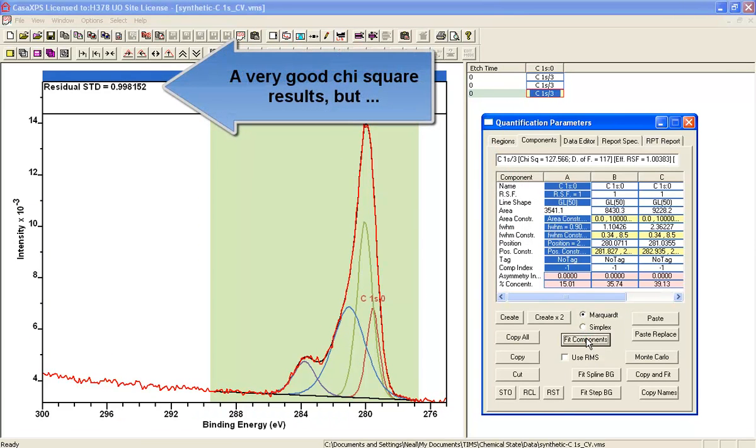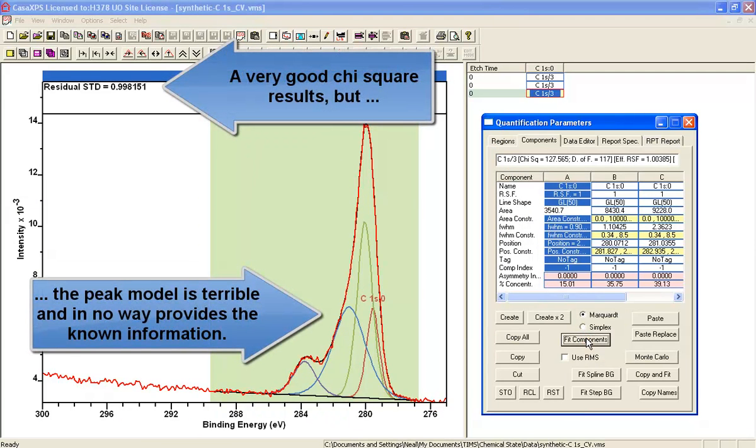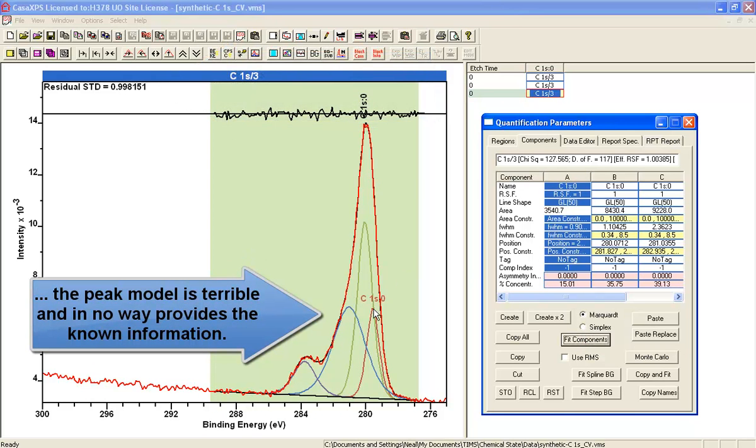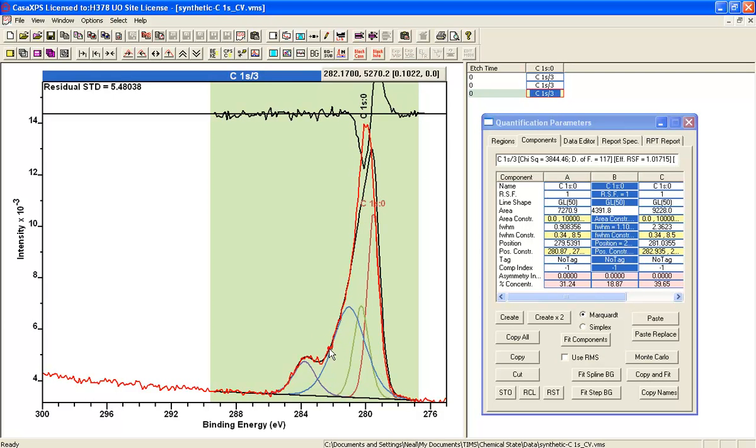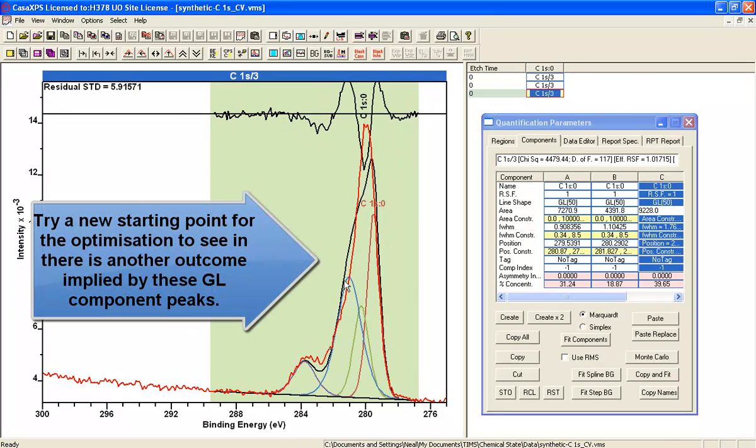And when we do the fit, again, fantastic residual standard deviation. It should be about one and it's come up slightly better than one. But the peak model itself is rubbish. There's nothing here that would be useful in terms of physics or chemistry.